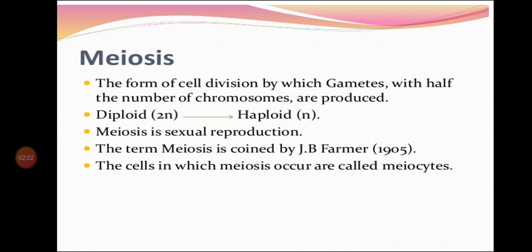Meiosis is associated with sexual reproduction. The term meiosis was coined by J.B. Farmer in the year 1905. The cells in which meiosis occurs are called meocytes. It takes place only in reproductive cells during the formation of gametes.